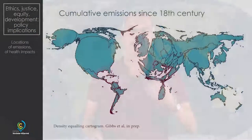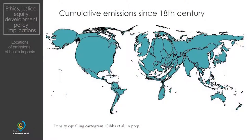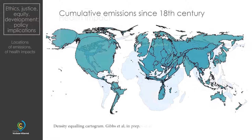You see here the cumulative emissions since industrialization, and you see in proportional size the countries to the extent to which they have contributed to global greenhouse gas concentrations. You can see that the northern countries are dominating, and in the south you see almost no contribution.